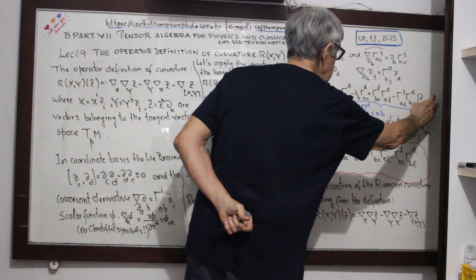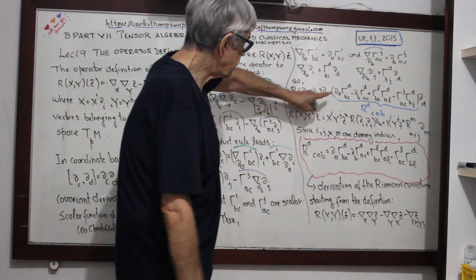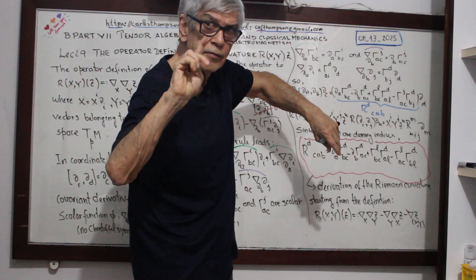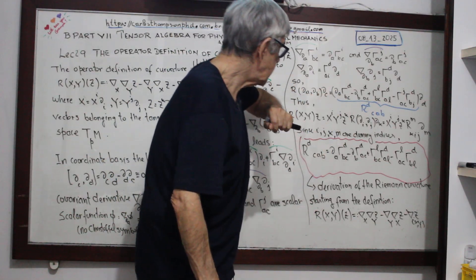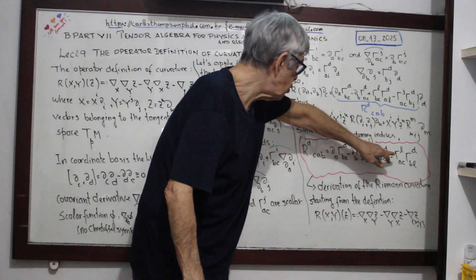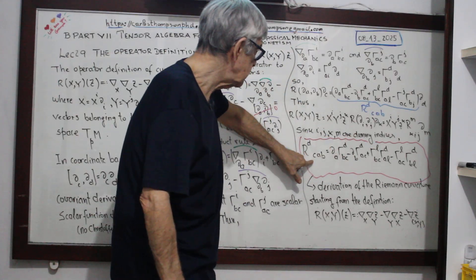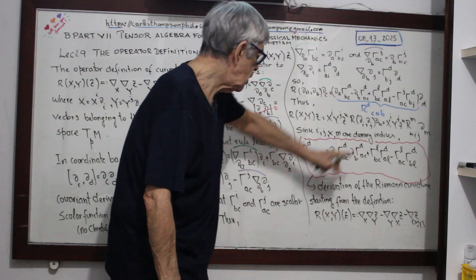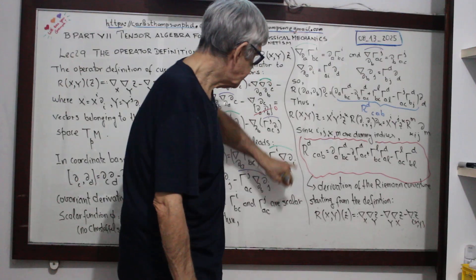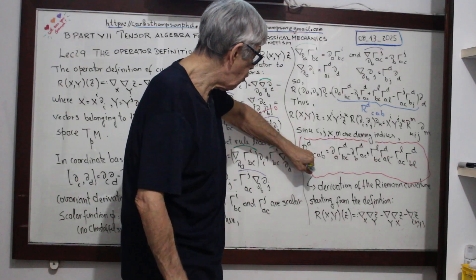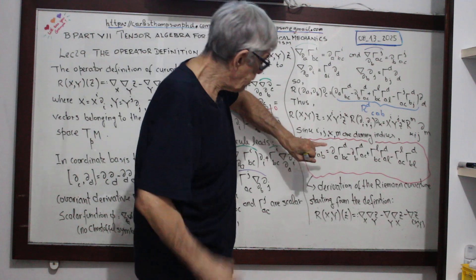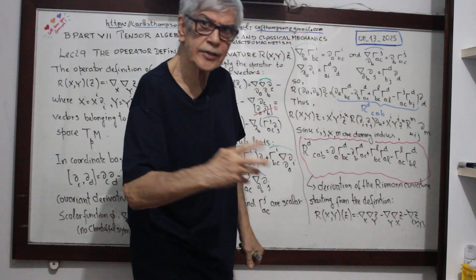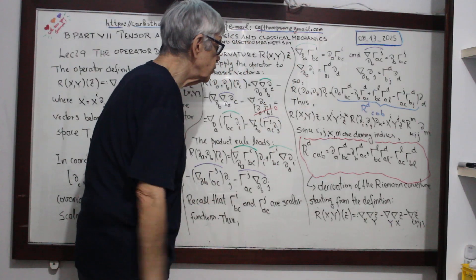This is a vector, this is ∂/∂x^d. These are just the components — four free indices here. L here is a dummy index, and L is a dummy. These are the free indices. Four free indices on the left-hand side must have four free indices on the right-hand side — that's just substitution.